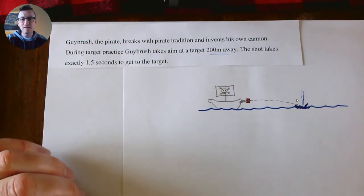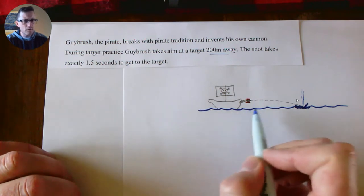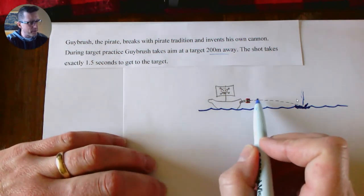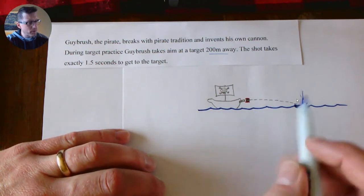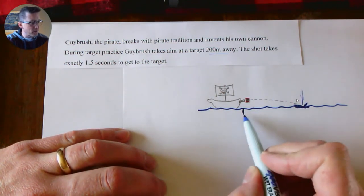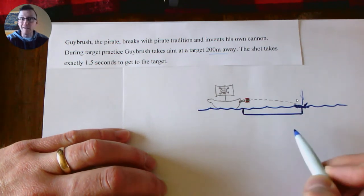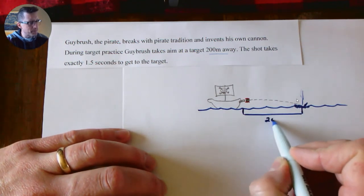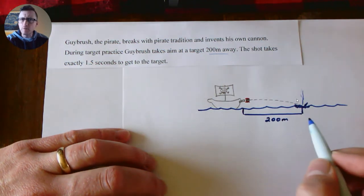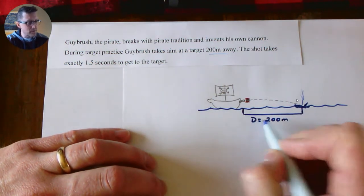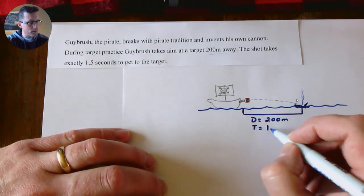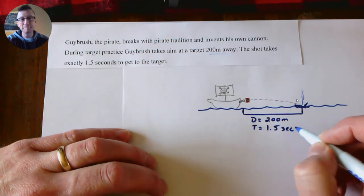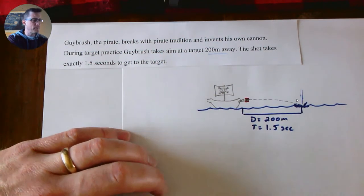What he finds is that when he shoots his cannon, when he's aiming at a target that is 200 meters away, the shot takes 1.5 seconds to get to the target. So to draw a little picture here of what that might look like: here we have our cannon, we know that it's shot at some sort of angle—don't know what that angle is—but we do know that the distance between where the cannon launched and where it lands is 200 meters.